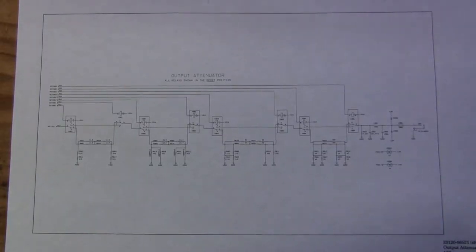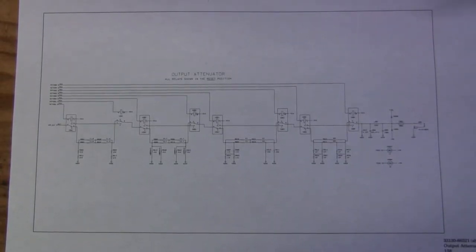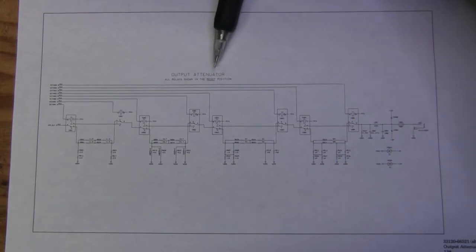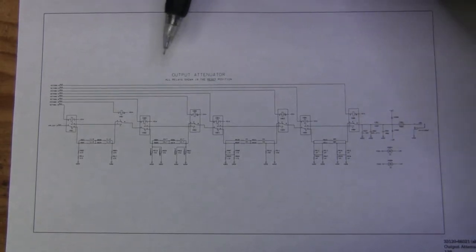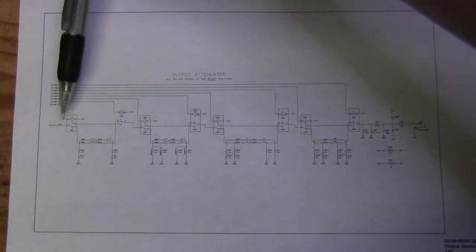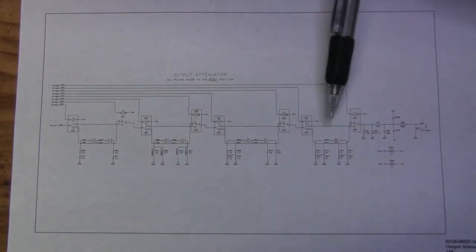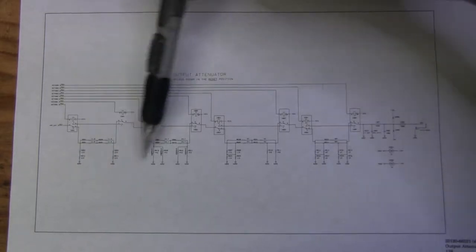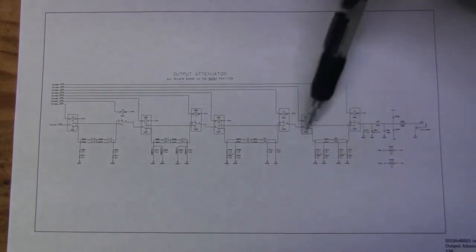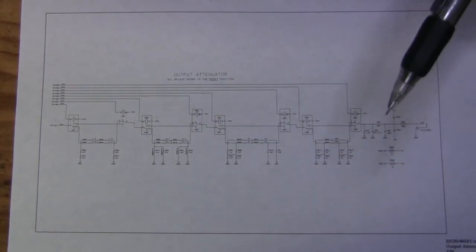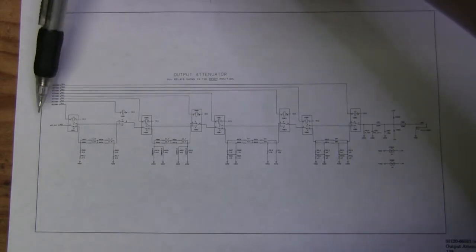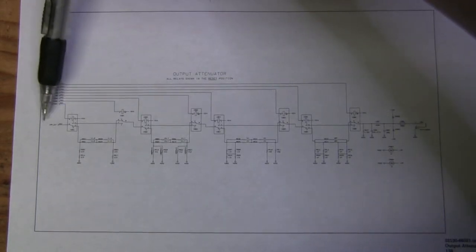So in the previous video we briefly looked at this output attenuator circuit. If we look a little closer, we can see these are relays which are clicking and these are dividers for different ranges.